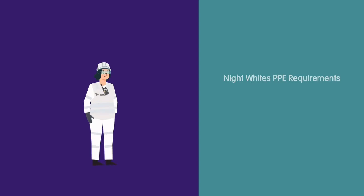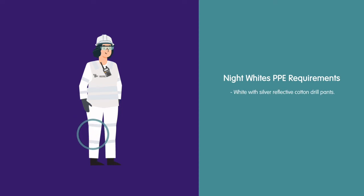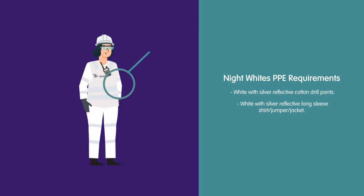Traffic controller night whites PPE requirements include: white with silver reflective cotton drill pants; white with silver reflective long sleeve shirt, jumper or jacket. And remember — lights on, whites on.